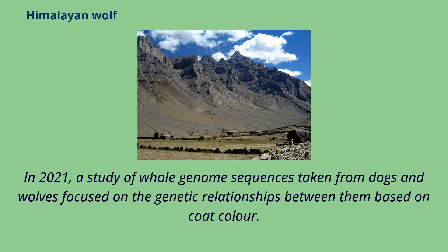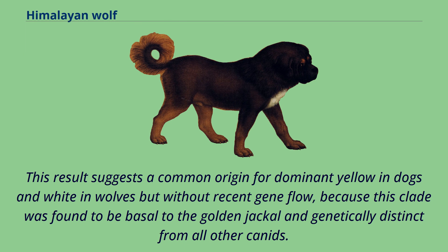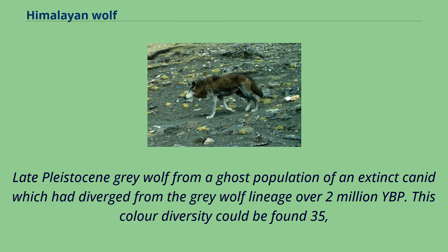In 2021, a study of whole genome sequences taken from dogs and wolves focused on the genetic relationships between them based on coat color. The study found that most dog color haplotypes were similar to most wolf haplotypes; however, dominant yellow in dogs was closely related to white in arctic wolves from North America. This result suggests a common origin for dominant yellow in dogs and white in wolves but without recent gene flow, because this clade was found to be basal to the golden jackal and genetically distinct from all other canids. The most recent common ancestor of the golden jackal and the wolf lineage dates back to 2 million years before present. The study proposes that 35,000 years before present there was genetic introgression into the late Pleistocene gray wolf from a ghost population of an extinct canid which had diverged from the gray wolf lineage over 2 million years before present.